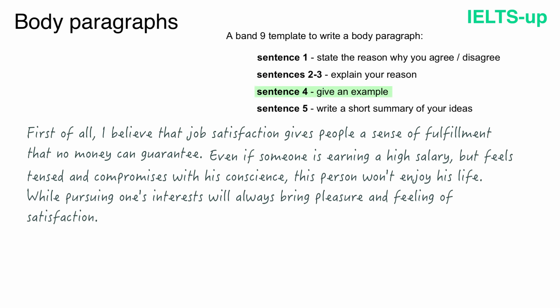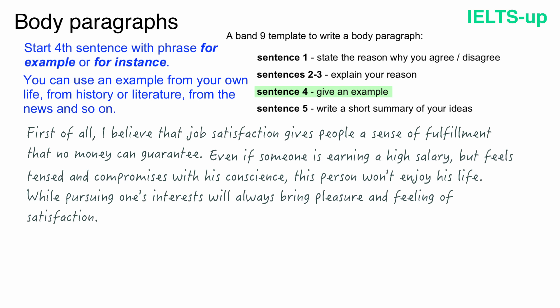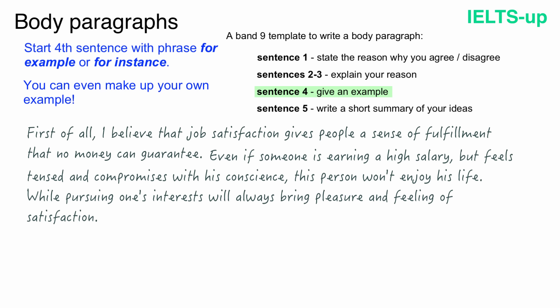Move on to sentence 4. In sentence 4, you should give an example to support your opinion. Start this sentence with the phrase 'for example' or 'for instance.' You can use an example from your own life, from history or literature, from the news and so on. You can even make up your own example. If you don't have enough time to think of an example, it's totally okay to use your imagination and make up a story. But be aware that you should create a logical example — don't make up some nonsense.